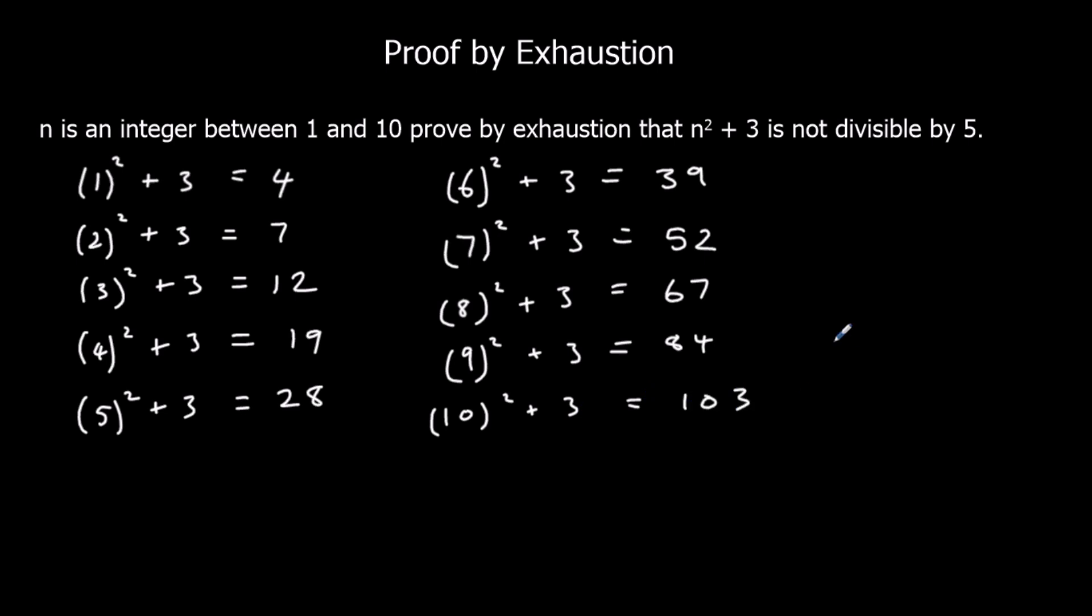So we have found out what all of the options are, and none of them are divisible by 5. None of these are divisible by 5. So we've proved it by exhaustion.